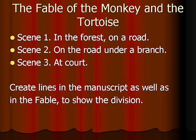In the fable of the monkey and the tortoise, I have seen there are three scenes: in the forest, on the road, on the road under a branch, and at a court. Now you can create lines in the manuscript — you go to the manuscript for a short period of time and make lines that show how you divide the text into different scenes.